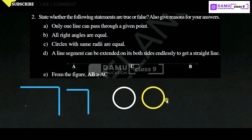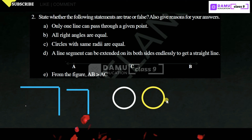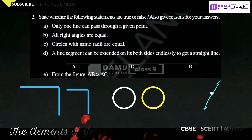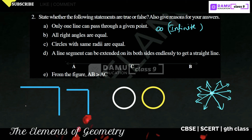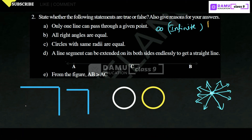Second question: state whether the following statements are true or false and give reasons. First: only one line can pass through a given point. Let's take one point — we can draw a line like this, and another like this, and so on. We can draw an infinite number of lines through a given point. So this statement is false.